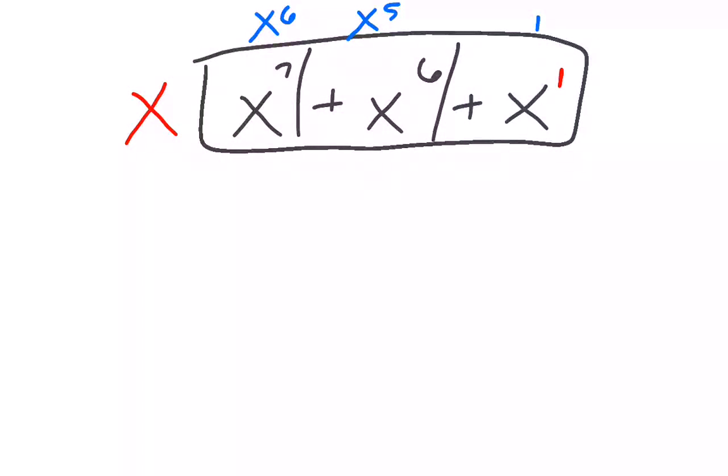1. Don't forget your addition. So my final answer is x times x to the 6th plus x to the 5th plus 1, and I can always double check with distributing that that is correct.